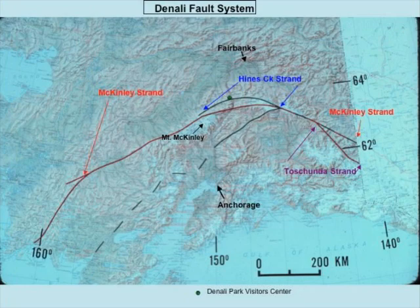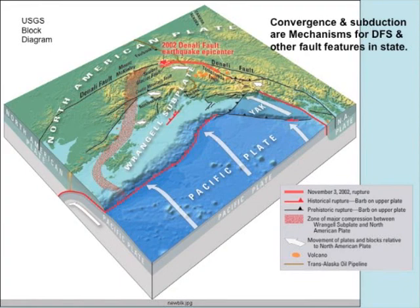You can see the green dot showing where we are now. The basic mechanism for why the faults are there is that as the Pacific Plate continues to subduct, there are tears, ruptures, faults, and folds going on well within the state, represented by the Denali Fault and many other faults up into the interior.